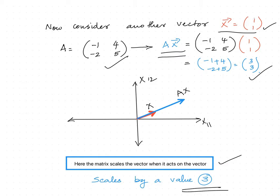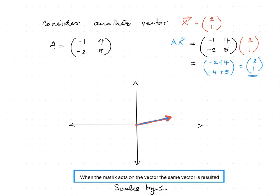So the scaling factor here is 3. Now let us consider another vector x = [2, 1]. When the same matrix acts on this vector, the resultant Ax is [2, 1], which shows that when the matrix acts on x, it results in the same vector. That means the scaling factor is 1. So we have x and Ax as the same vectors, where x11 and x12 are the axes.